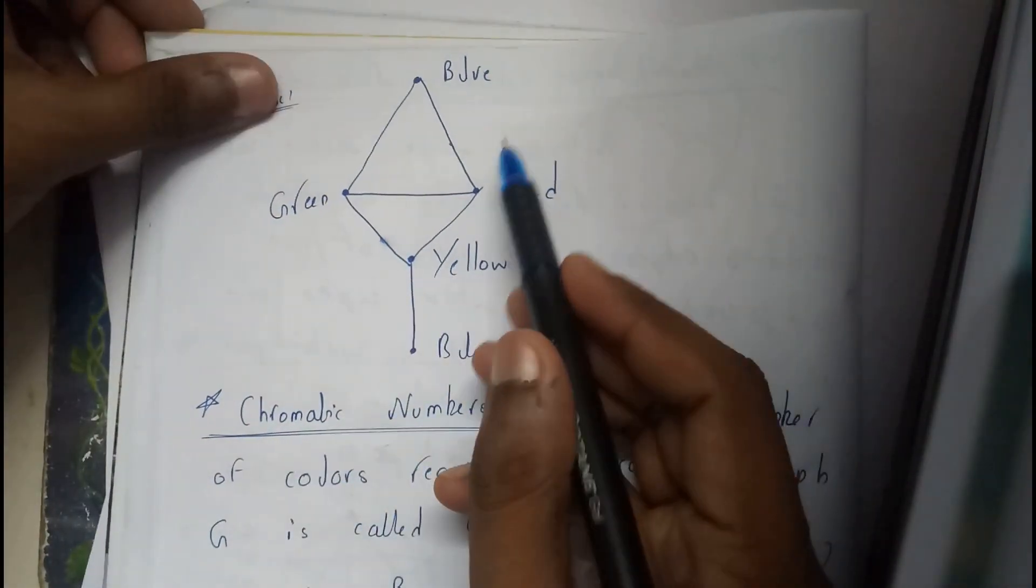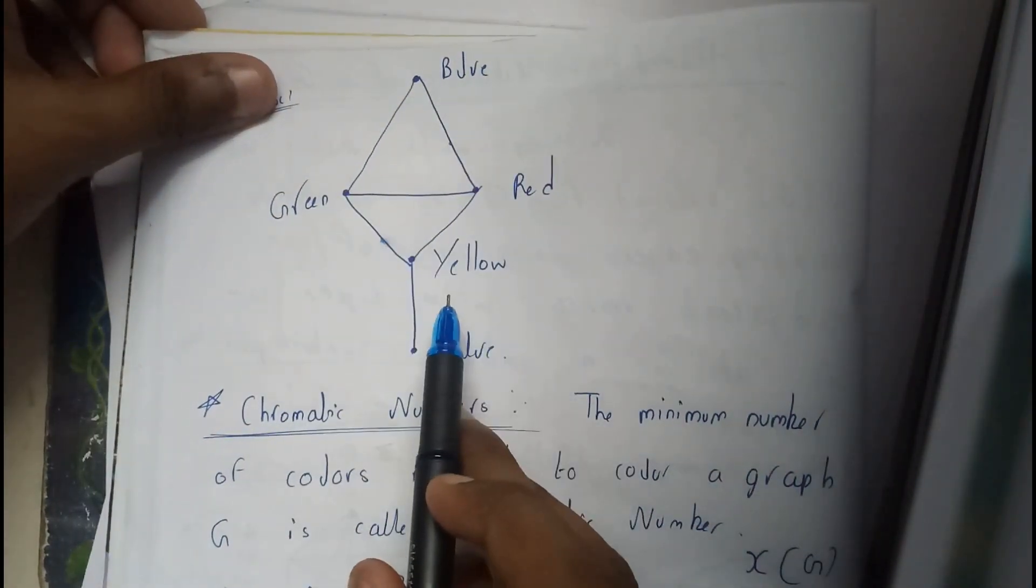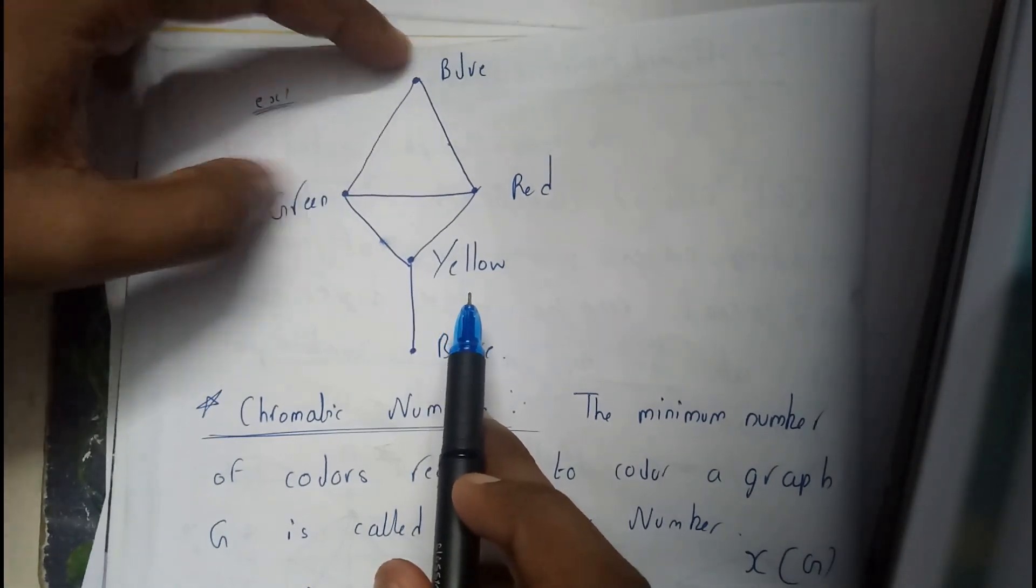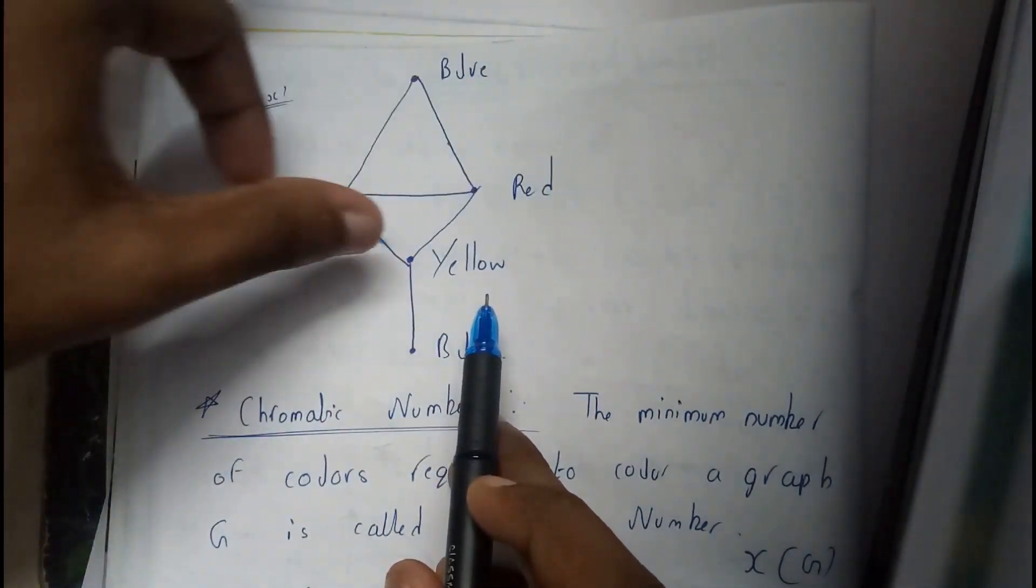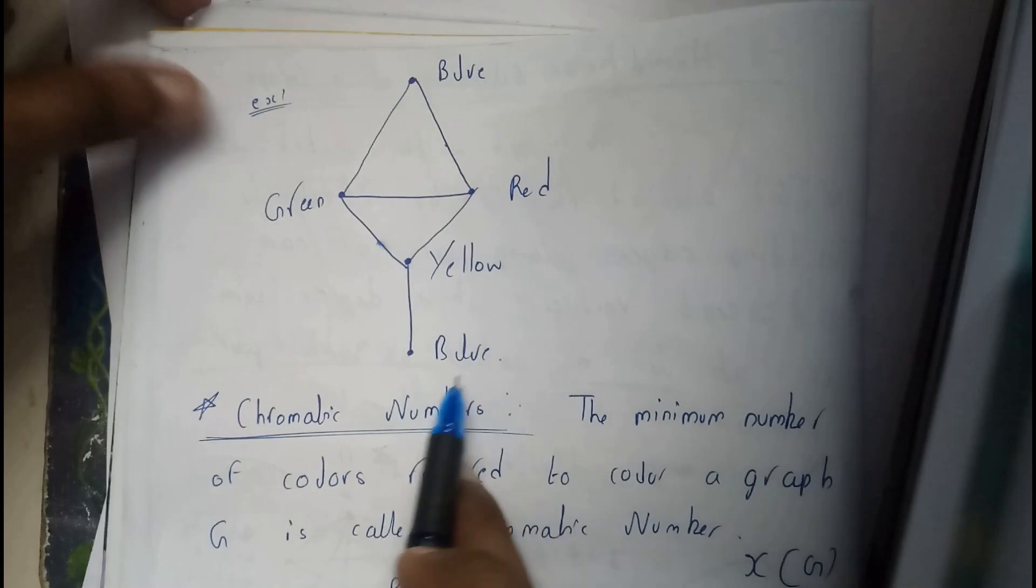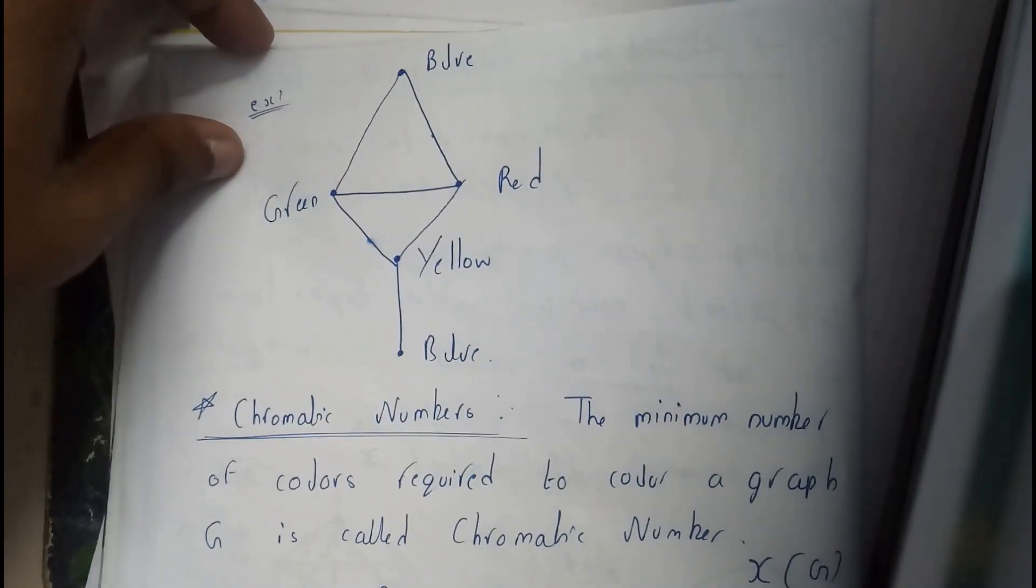Here I have different colors for different vertices. See two adjacent are not same: blue red, red yellow, green yellow, yellow blue. Hence this is the coloring property of a graph.